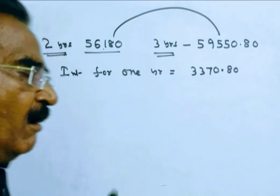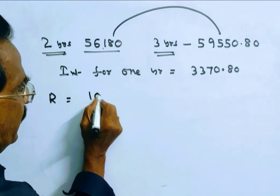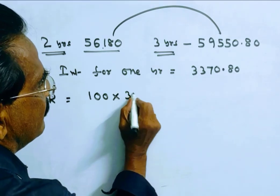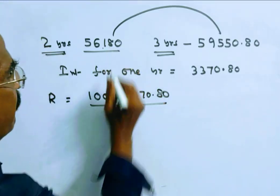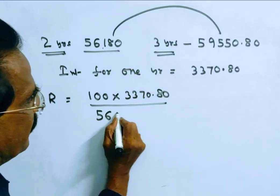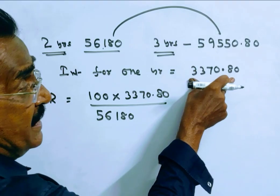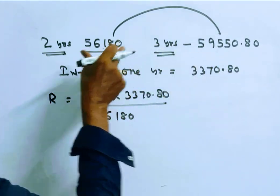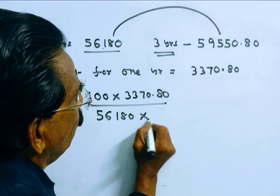Friends, now we can find R. R is equal to 100 I by PT, 56,180. Friends, this interest is earned on 56,180 per 1 year into 1.